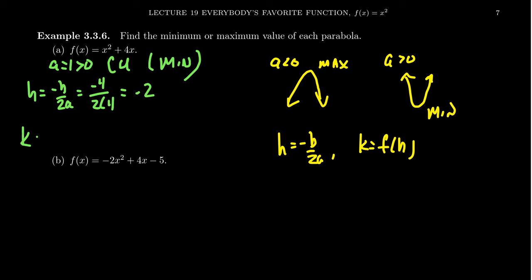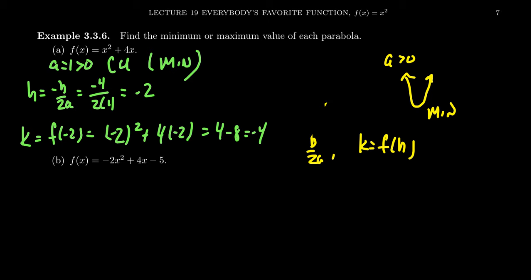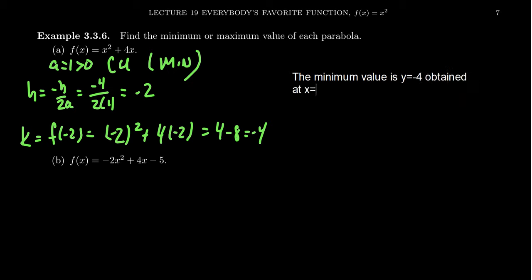And then the k value, we look at f of negative 2, like so. That's going to give us a negative 2 squared plus 4 times negative 2. So we get 4 minus 8, which is equal to negative 4. And so clearing this stuff out right here, we then record our answer. We could say that the minimum value is y equals negative 4 obtained at x equals negative 2. So the minimum value here is going to be negative 4.